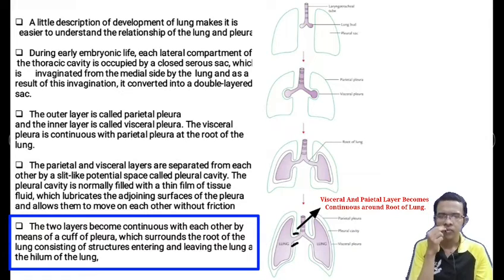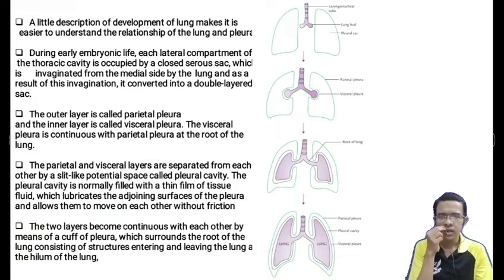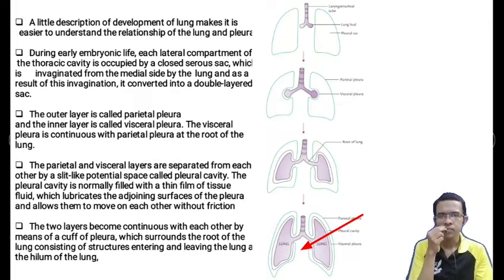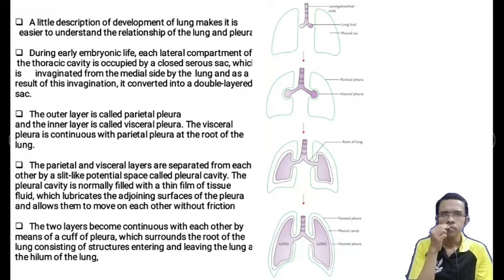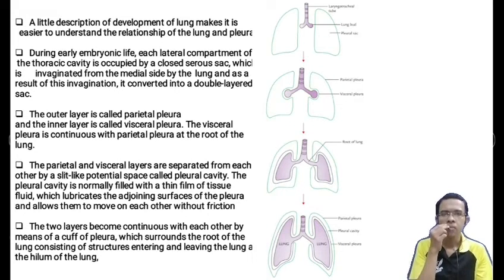The root of the lung refers to a collection of structures that either enter or exit the lung. This collection of structures forms a pedicle which connects the lung with the mediastinum. The mediastinum is basically a mobile tissue partition located between the two lungs — a space occupied by a number of organs and tissues making it a mobile partition. The mediastinum is connected to the lung by means of the lung root.